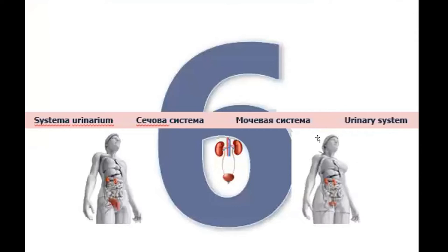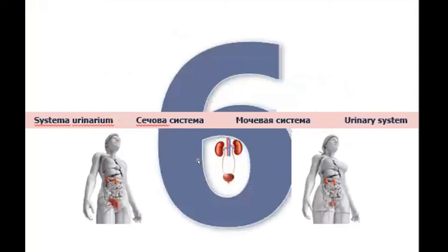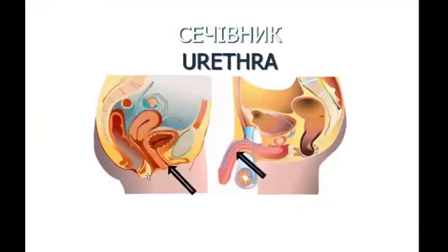Number six: the urinary system. The urinary system differs between male and female. Number six because only six organs are present in the urinary system: two kidneys, two ureters, one urinary bladder, and one urethra. In male and female, the size differs because of different location.